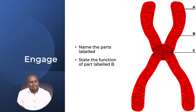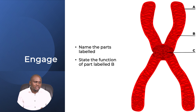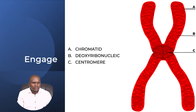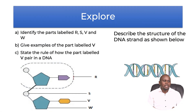Before we look at DNA, we need to first look at the structure of the chromosome. As you can see, we have some parts of the chromosome. There is a pair of chromosomes that carries DNA — this is where inheritance and variation takes place in our bodies. You would need a very sophisticated electron microscope to see them. We have part A, which is the chromatid; part B, which is the deoxyribonucleic acid, that is the DNA; and part C, which is the centromere. The function of part B is to carry the genetic material.